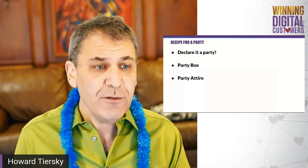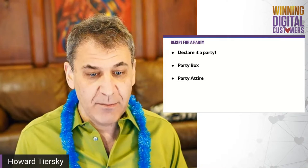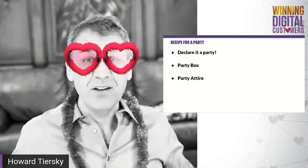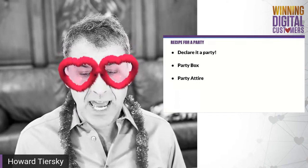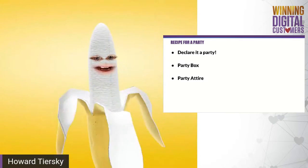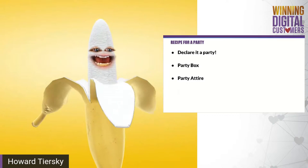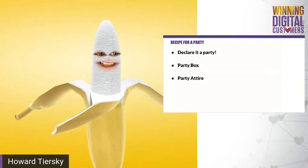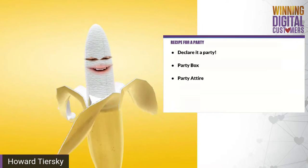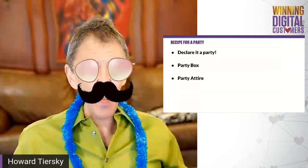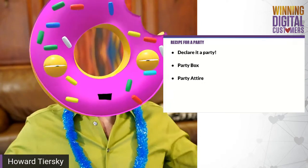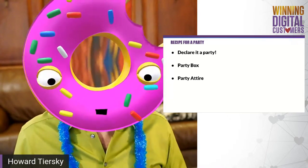Another form of party attire is to use a tool that allows you to augment your video. I'm using a tool called Snap Camera, which comes from the people who make Snapchat. There are all kinds of filters — here, I'm a banana! It takes my video signal and does crazy things to it. It can be something subtle like just adding a mustache and glasses. Imagine everyone shows up to your party with a filter like this.